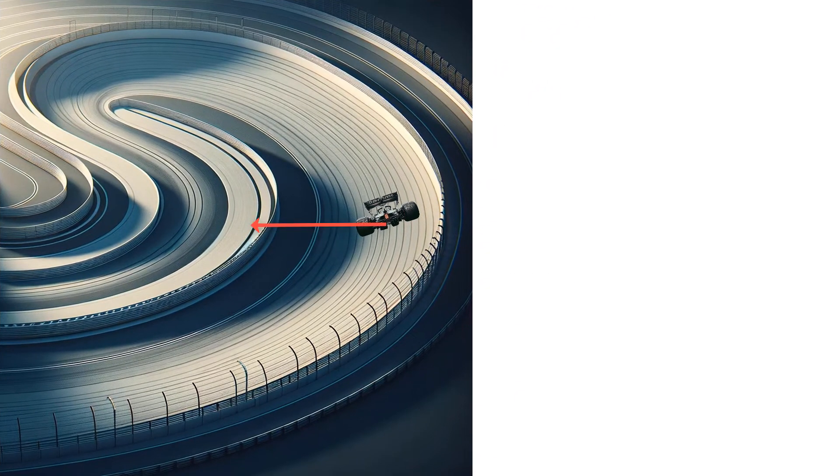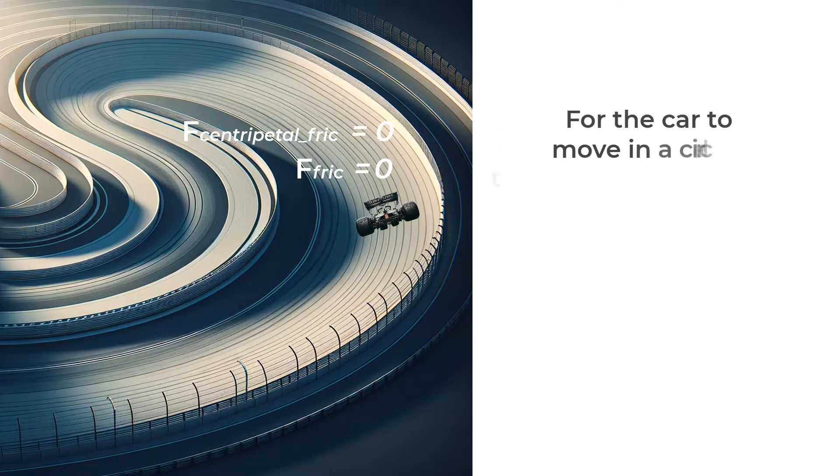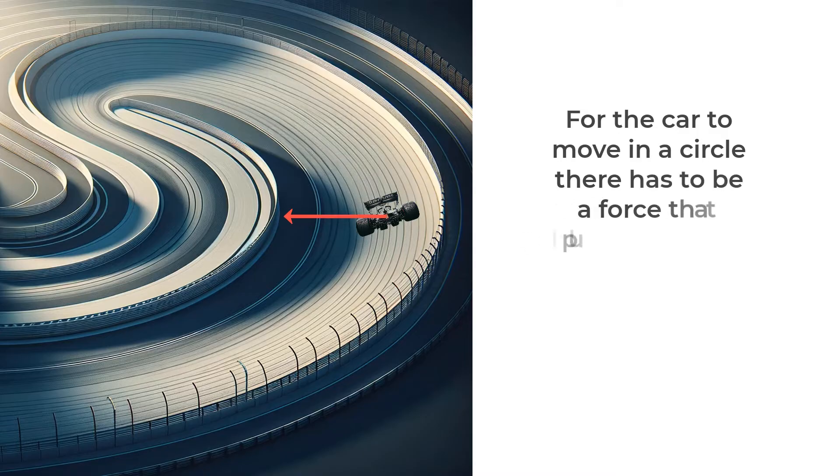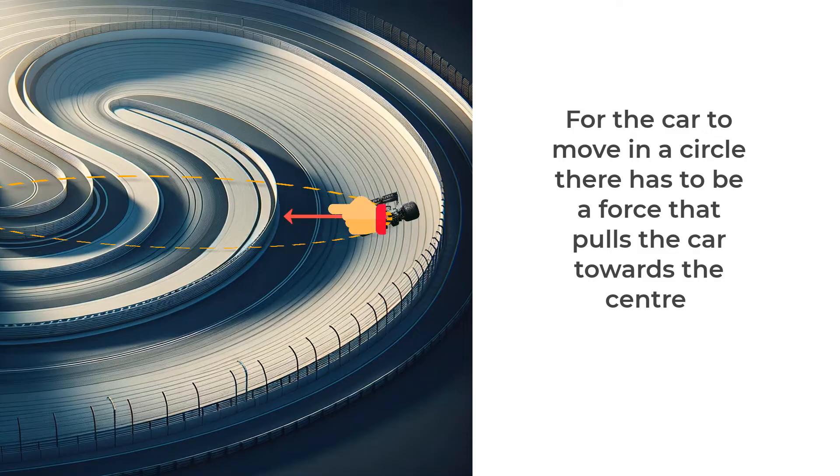Now when friction force between the track and the tire is absent, the centripetal force contribution from the friction force would be zero. But then for the car to move in a circle, there has to be a force that pulls the car towards the center, or in other words, provides the required centripetal force. So what happens with these tracks is that because the road is tilted at an angle...